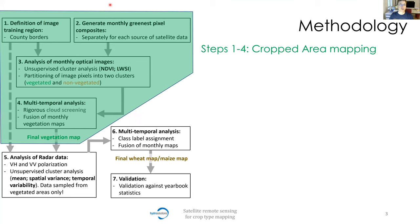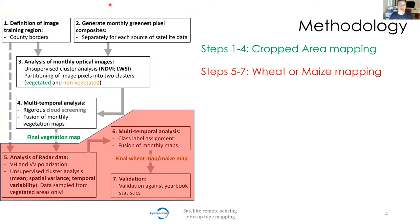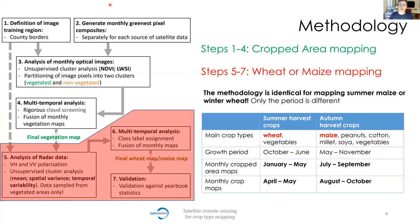First we map the cropped area using optical remote sensing imagery, then in the next steps we map wheat or maize within the cropped area — identifying all pixels that can be associated with wheat or maize. Wheat is the most important summer harvest crop, planted in October and harvested in June. We look at the months January to May to identify wheat planting area.